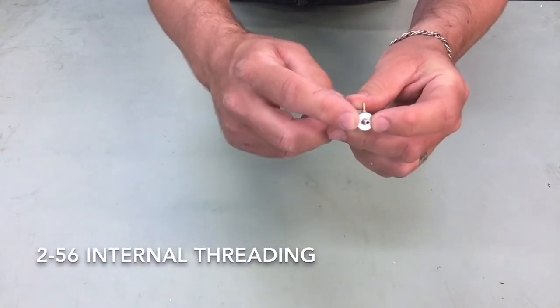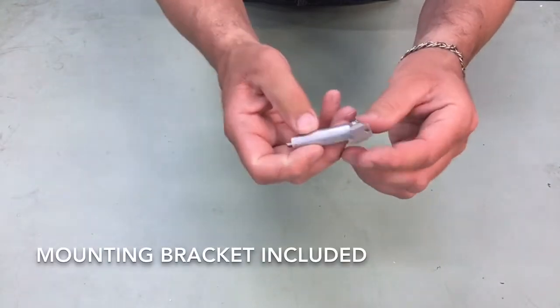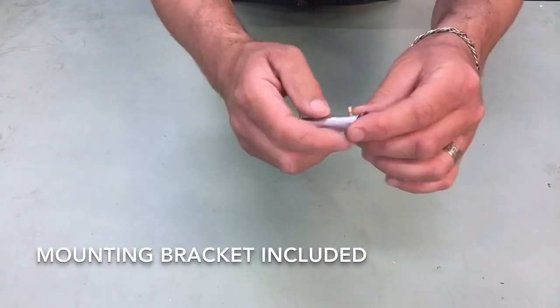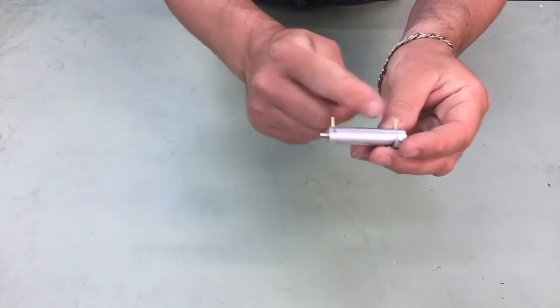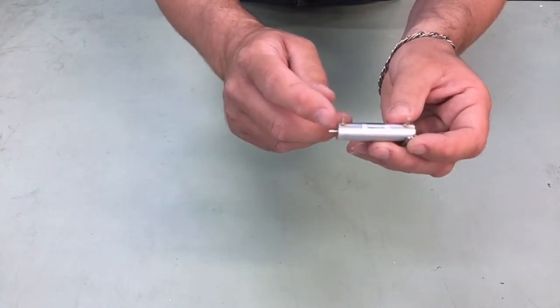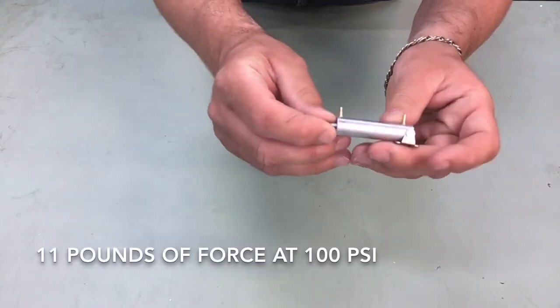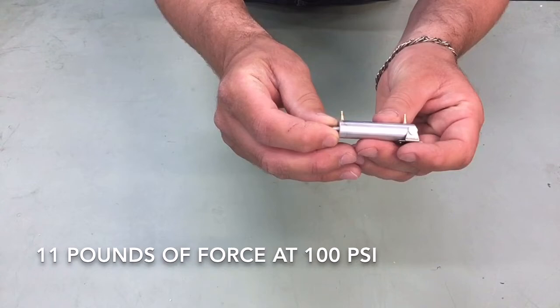The end of the push rod is a 2-56 internal threading. It does come with a mounting bracket. It has the two air nipples on it that are 90 degrees from the air cylinder. And it does offer 11 pounds of force at 100 psi.